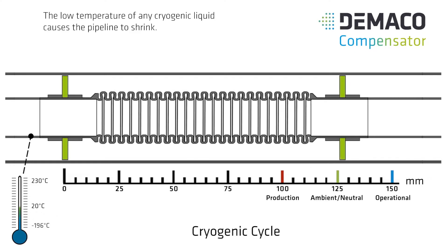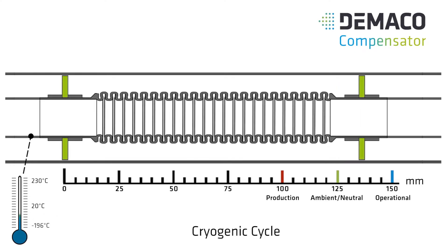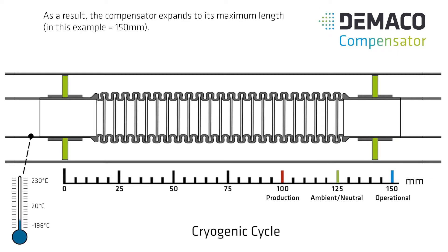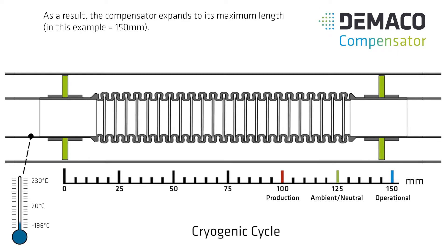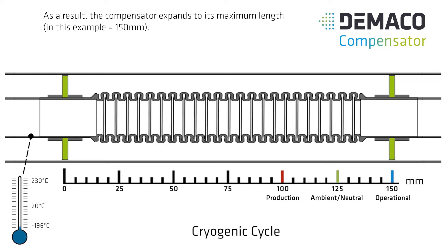The low temperature of any cryogenic liquid causes the pipeline to shrink. As a result, the compensator expands to its maximum length — in this example, 150 mm.